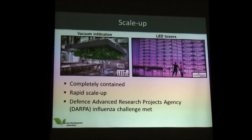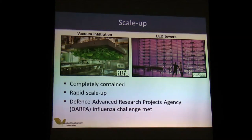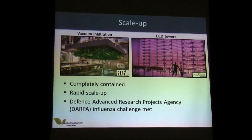With the move to the use of plants, scale-up has been shown to be very easy. These are facilities shown by iBio using the vacuum infiltration method to infiltrate a huge number of plants. Caliber uses LED lights with towers going up to about two stories of plants, keeping 4 million plants growing at a time. iBio and Caliber were given a challenge by DARPA to produce influenza vaccine within 28 days for a certain number of doses, and they managed to meet that challenge. So it's easily scalable and works really fast.